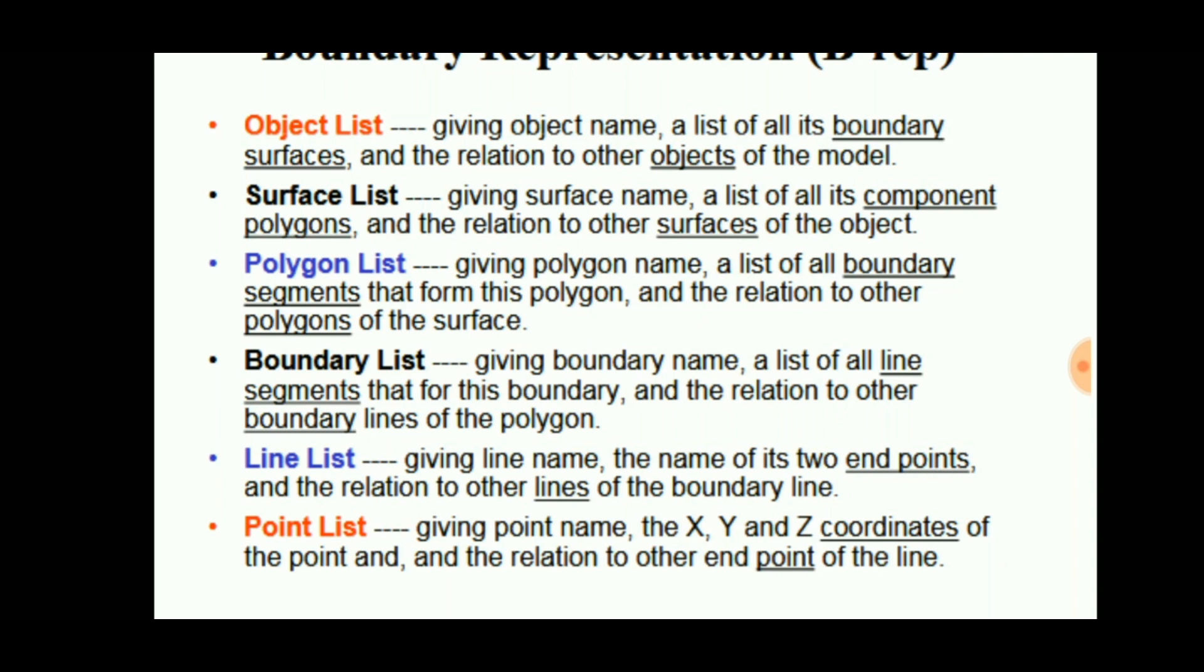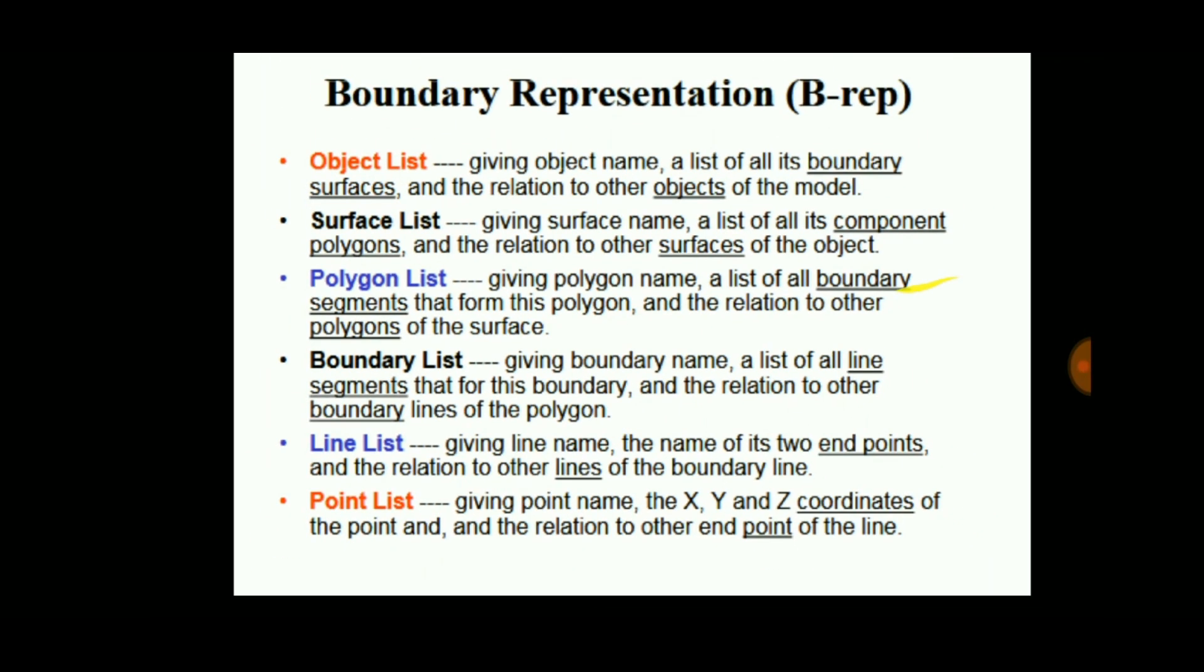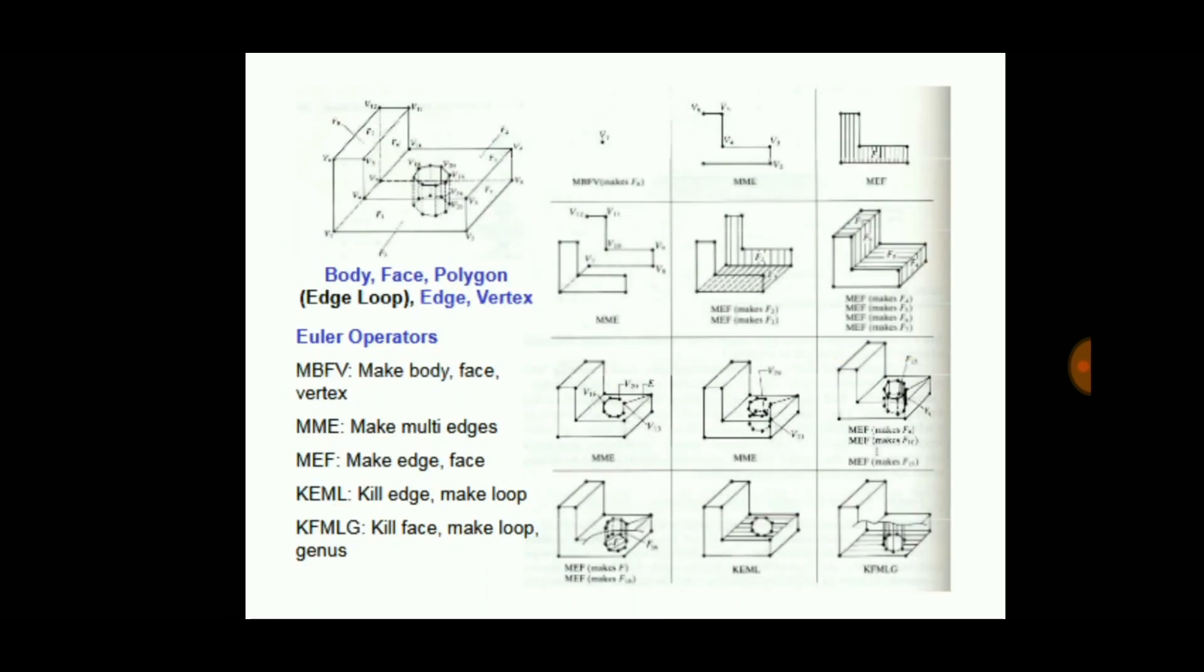The point list consists of the XYZ coordinates, the line list consists of points, the boundary list consists of lines, the polygon list consists of boundaries, the surface list consists of polygons, and finally the object list consists of surfaces so that it can make a complete product.